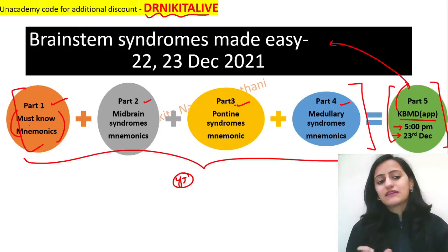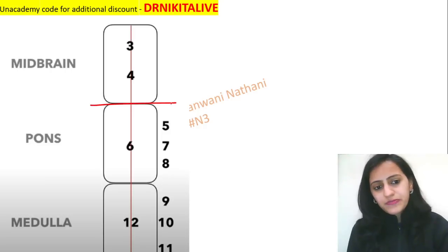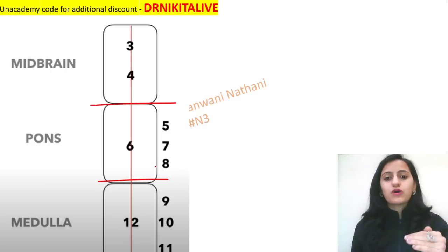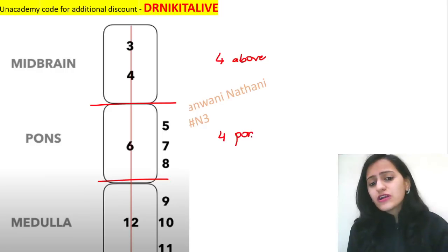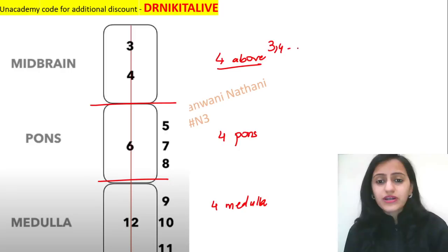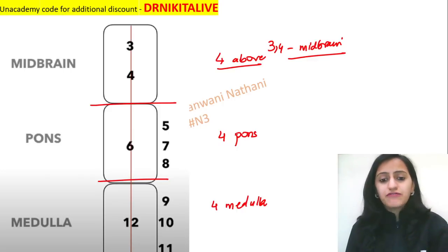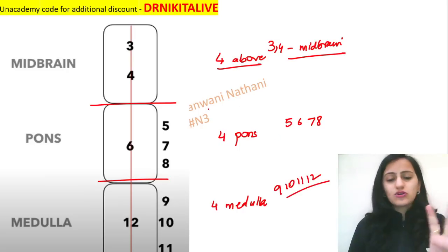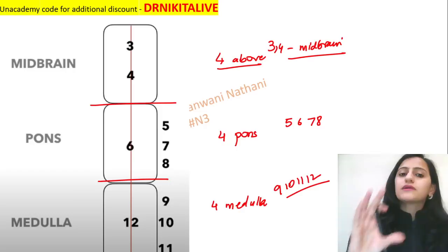Let's start with today's topic — the must-know mnemonics for brainstem syndromes. We have the rule of four for cranial nerves: four cranial nerves originate above the pons, four from the pons, and four below the pons from the medulla. So out of the total 12 cranial nerves, this distribution helps us localize a syndrome to a particular part of the brainstem.